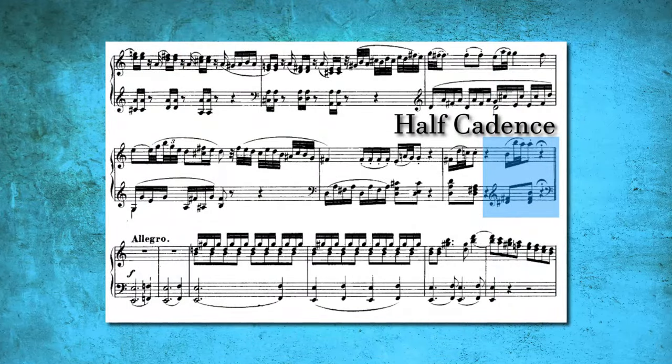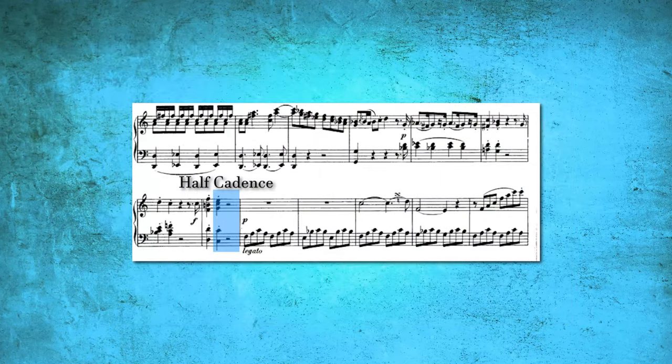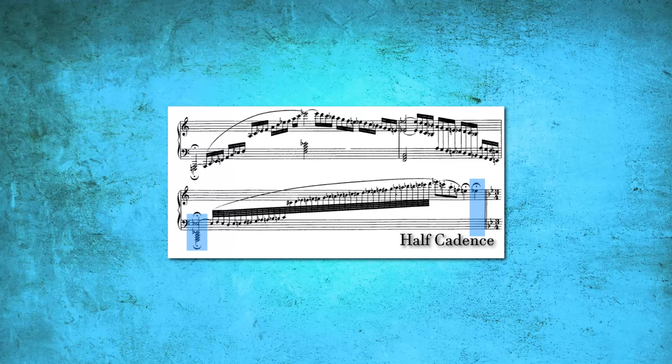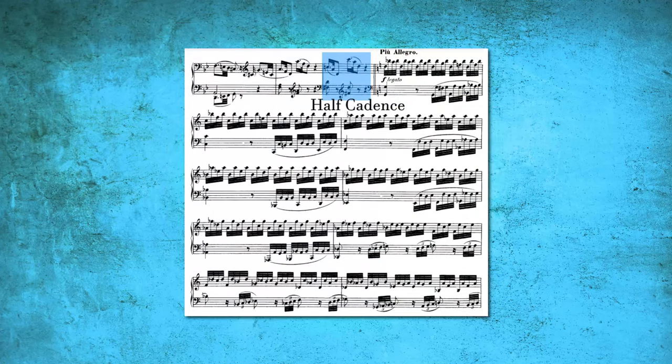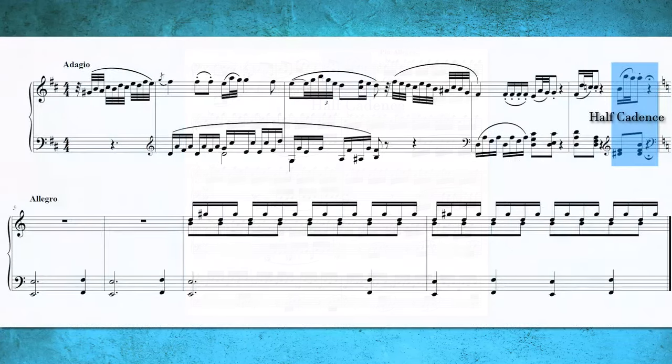Mozart employs the half cadence as a linking device, facilitating a smooth transition between the various sections of the fantasy. This technique ensures a seamless flow between the contrasting musical ideas, contributing to an overall cohesion and unity of the composition.